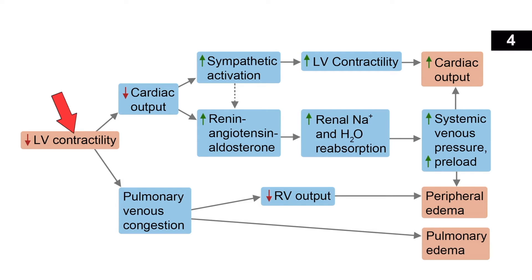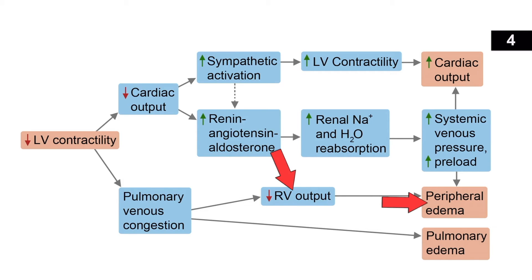Decreased left ventricular contractility also affects fluid coming in: blood backs up causing pulmonary venous congestion, which results in decreased right ventricular output. The most common cause of right-sided heart failure is left-sided heart failure. Left-sided failure increases afterload on the right side by congesting the pulmonary vasculature, contributing to peripheral edema as systemic venous pressure rises and fluid weeps into tissues — and pulmonary congestion causes pulmonary edema.